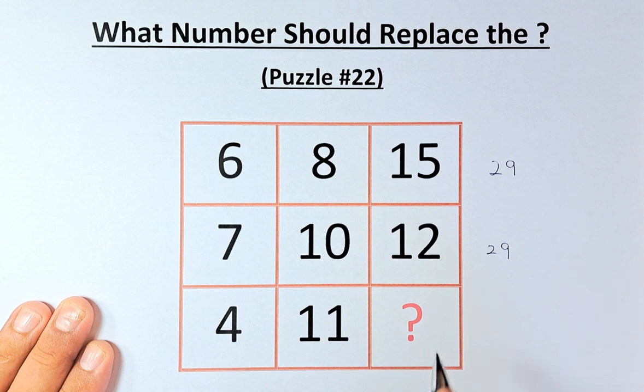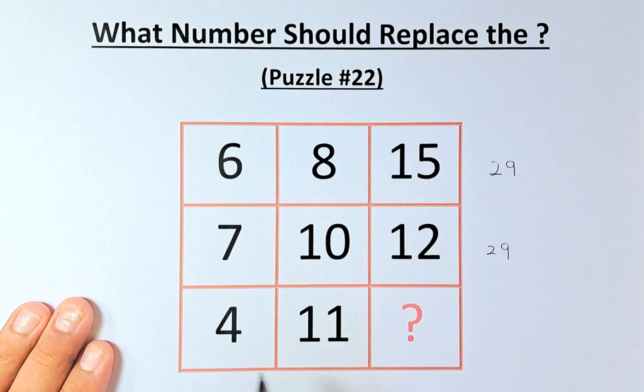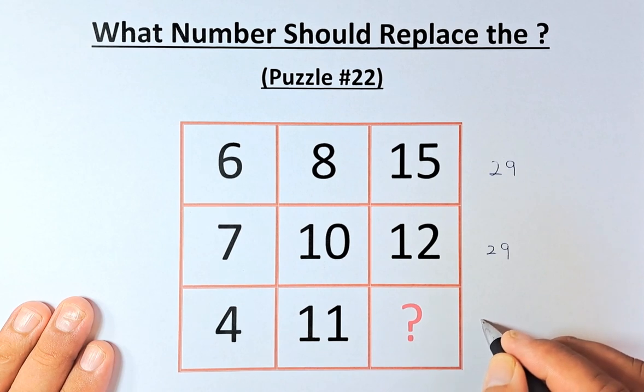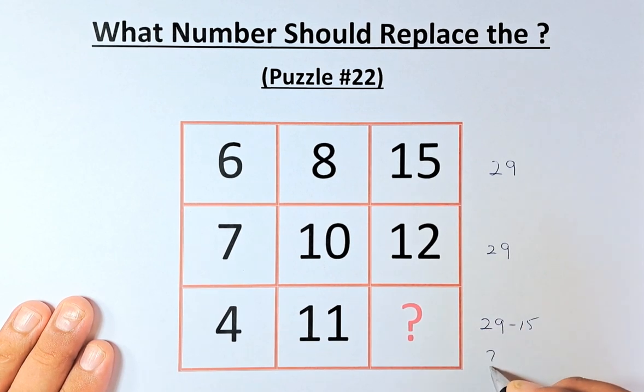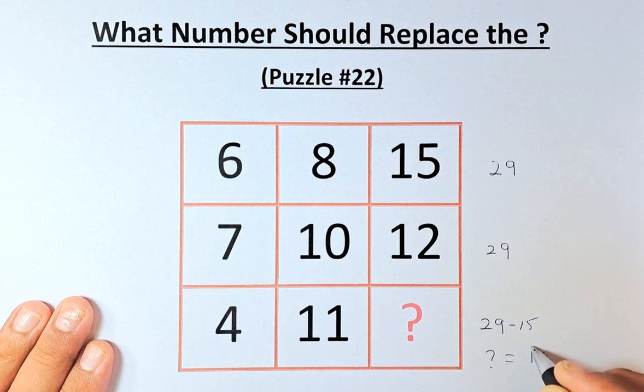So the trick here: the question mark, 4 plus 11 plus the question mark must also be 29. So 4 plus 11 is 15. 29 minus 15, the question mark has to be 29 minus 15. And the question mark is equal to 14.